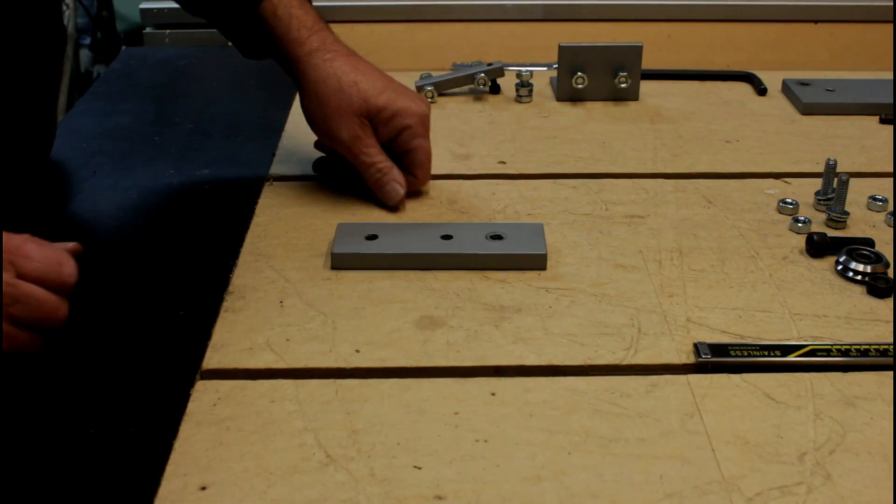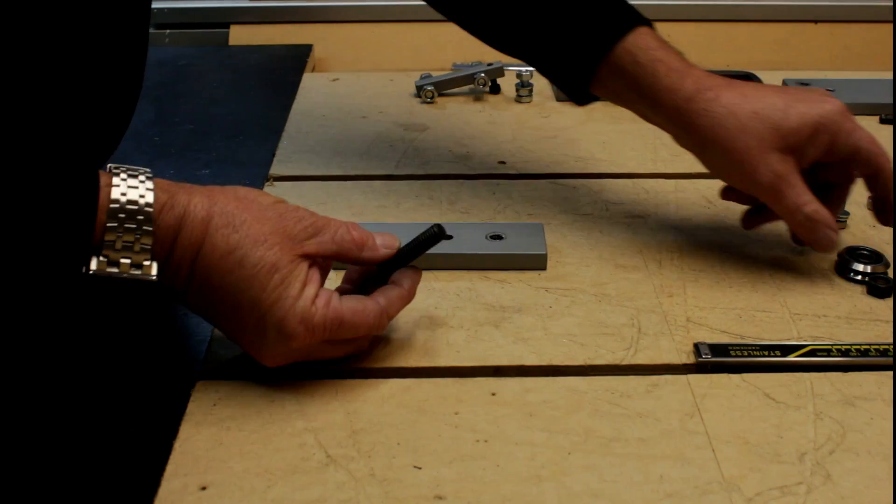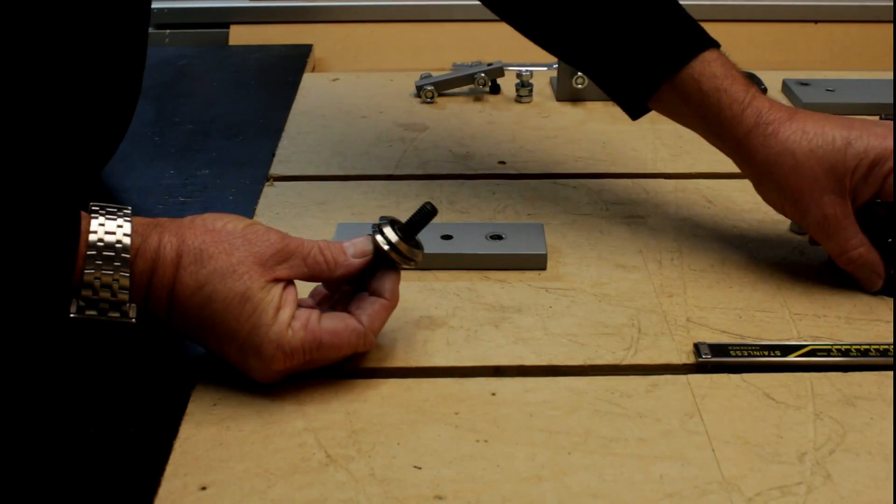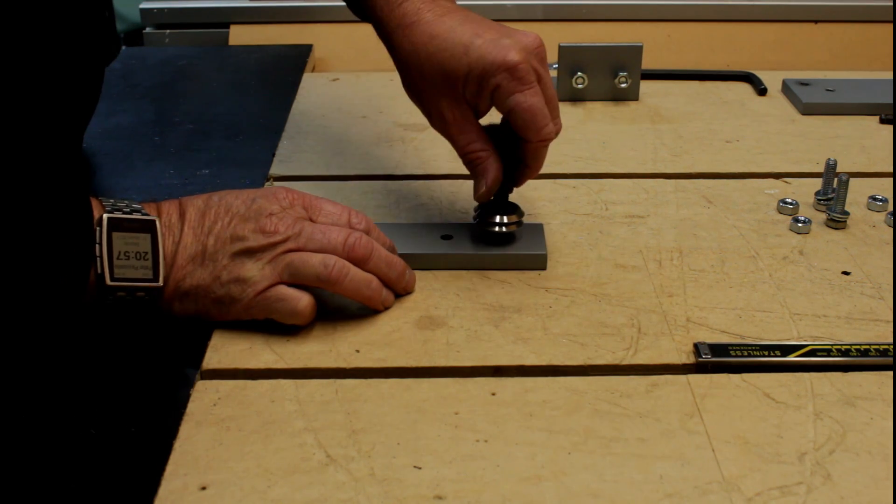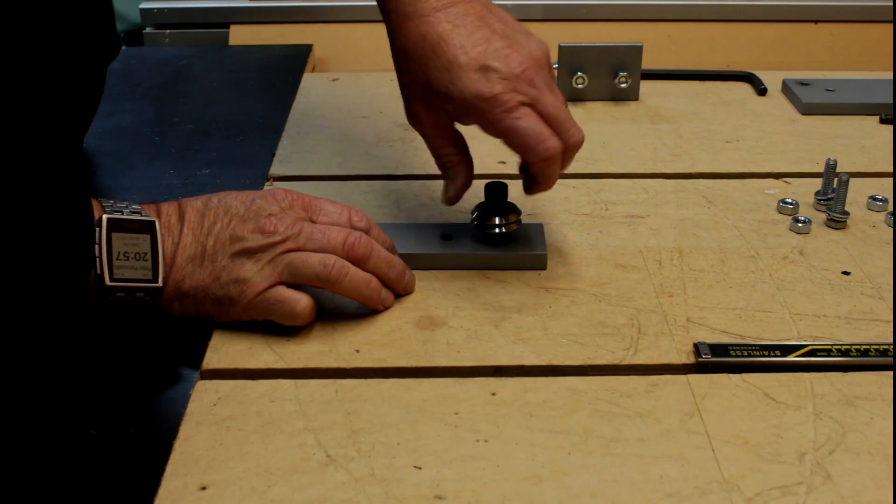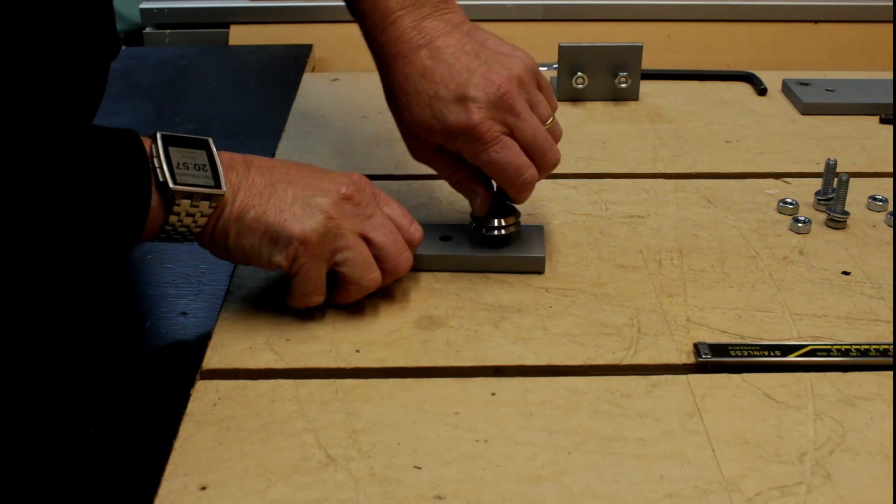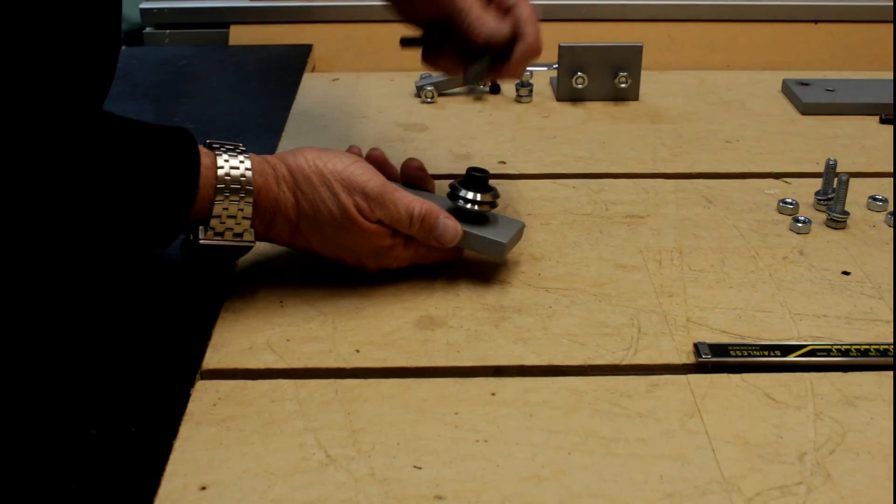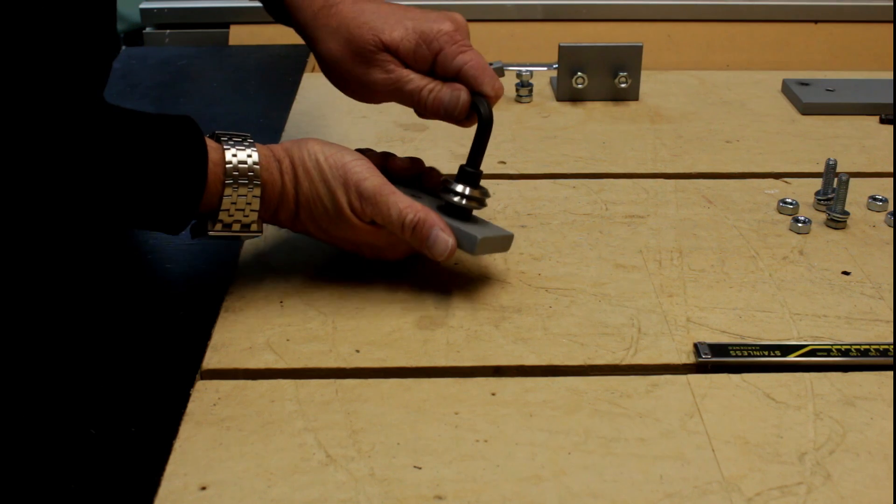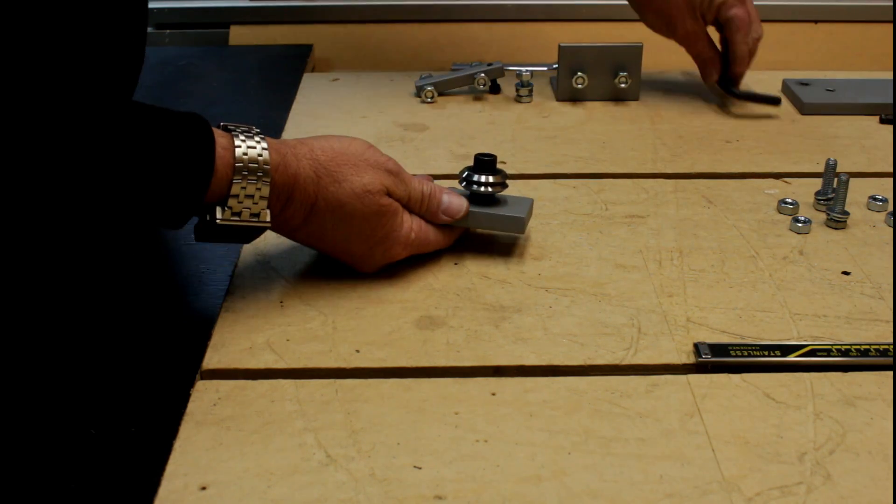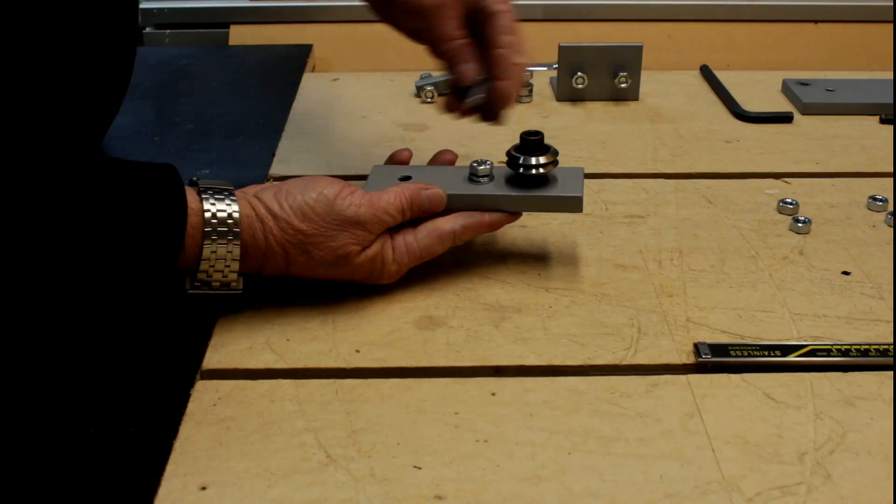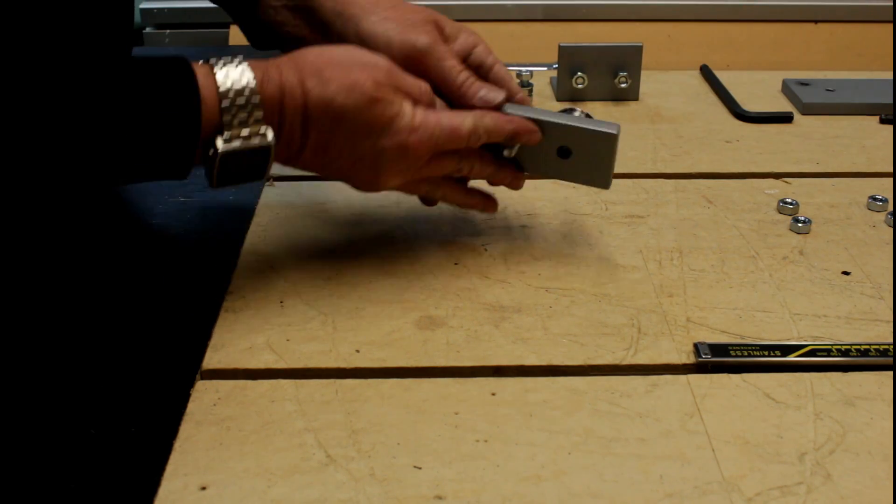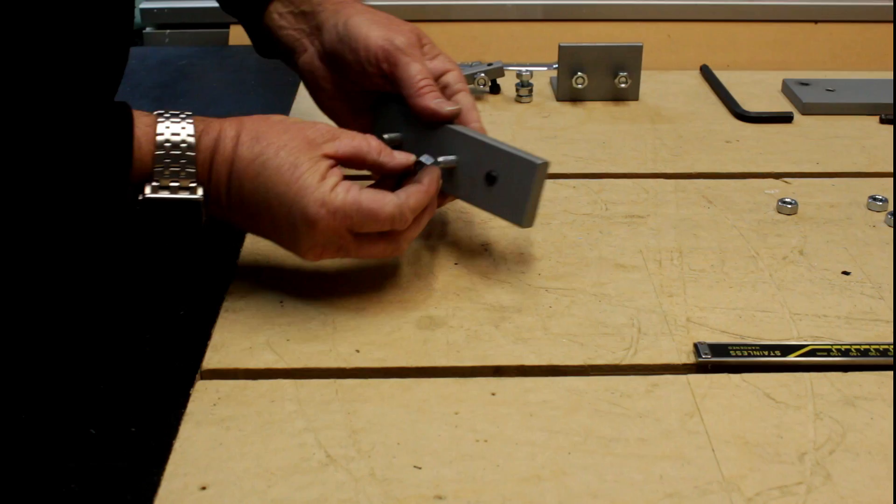The bottom V-bearing rail has only a single V-bearing installed on it. It mounts to the rail using a 3/8 bolt and a drilled-out nut which is used as a spacer. It threads directly into the rail. Two additional bolts are added, and these will be used to attach it to the aluminum extrusion.